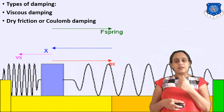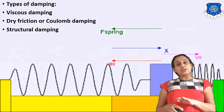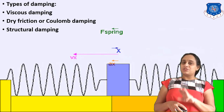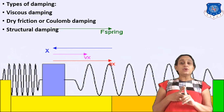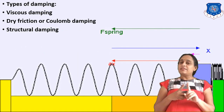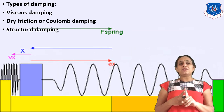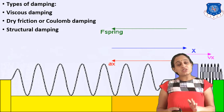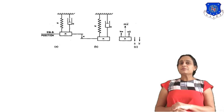Structural damping is where the structure itself behaves like a damper. So there are three types: first, viscous damping using fluid; second, dry friction or Coulomb damping where friction resists motion; and third, structural damping where the structure behaves with damping properties.